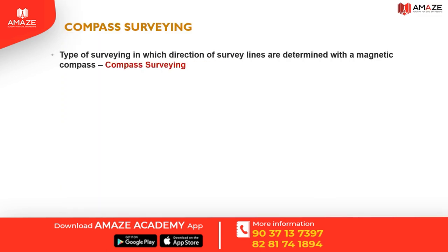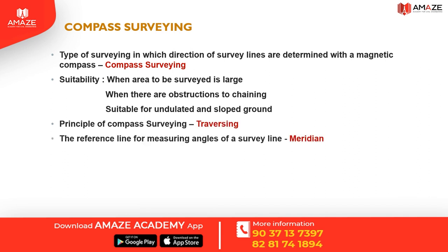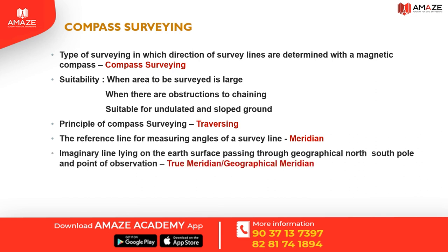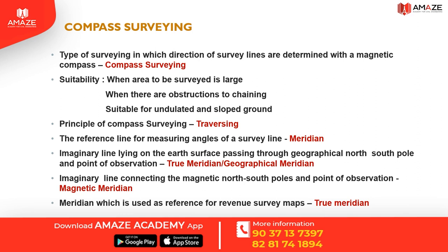In compass surveying, a magnetic compass is used to determine the direction of survey lines. We use compass surveying when the area to be surveyed is large, when there are obstructions to chaining, and when the ground is undulated. The principle of compass surveying is traversing. The reference line for measuring angles of a survey line is called a meridian. Meridian is of two types: true meridian and magnetic meridian. The imaginary line connecting geographic north-south poles and the point of observation is the true meridian. The line connecting magnetic north-south poles and the point of observation is the magnetic meridian. Revenue survey maps reference the true meridian.